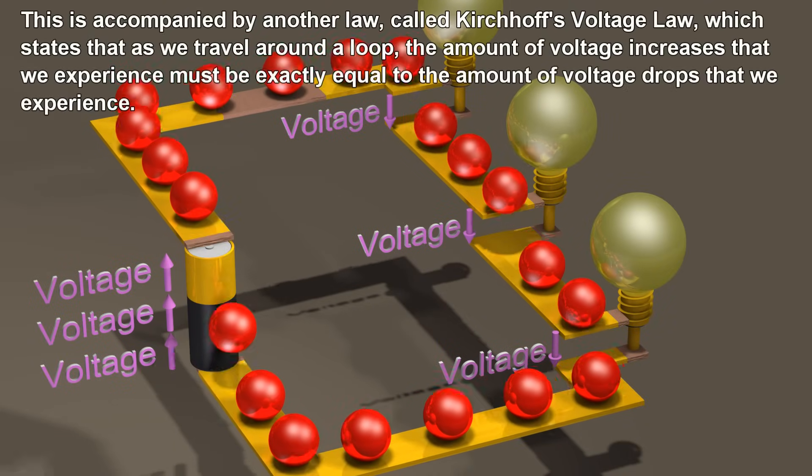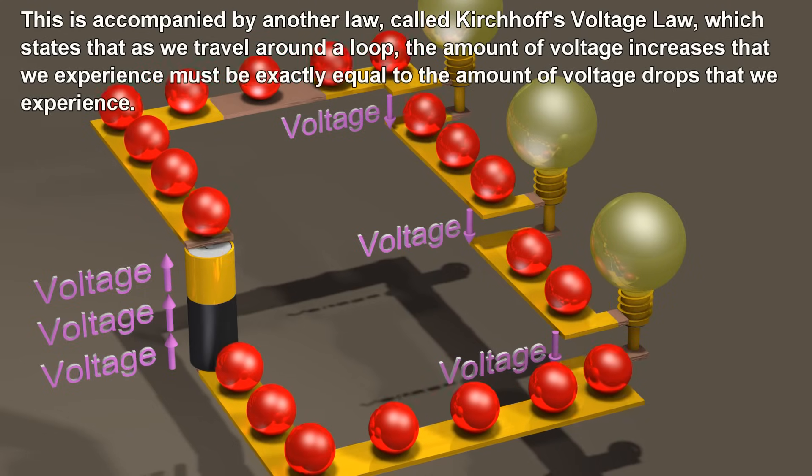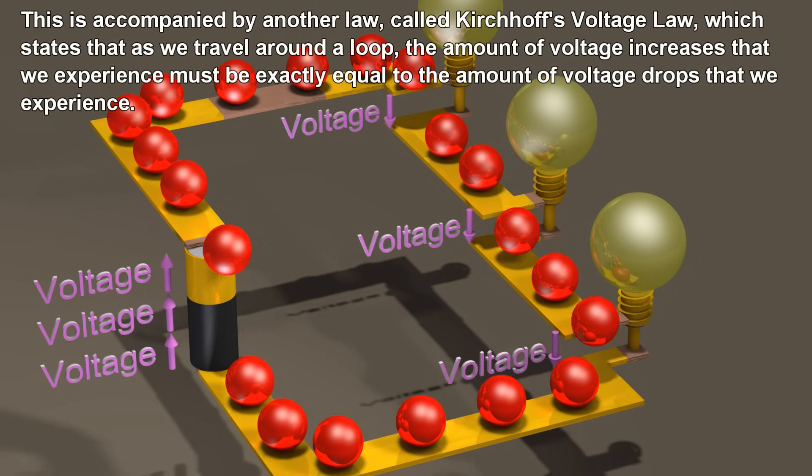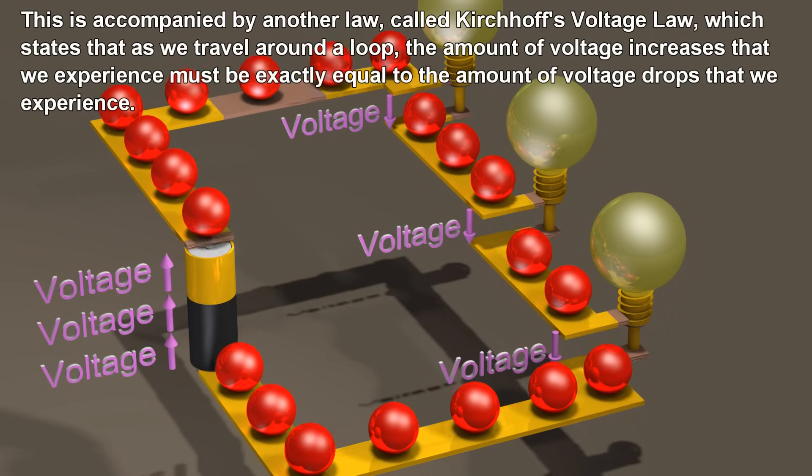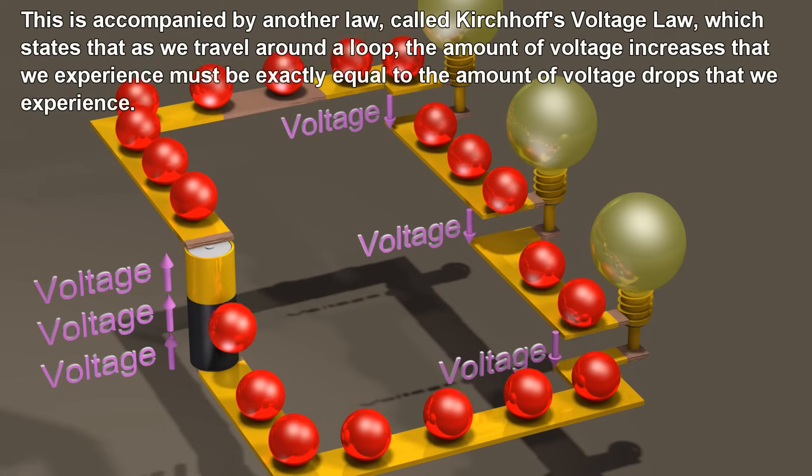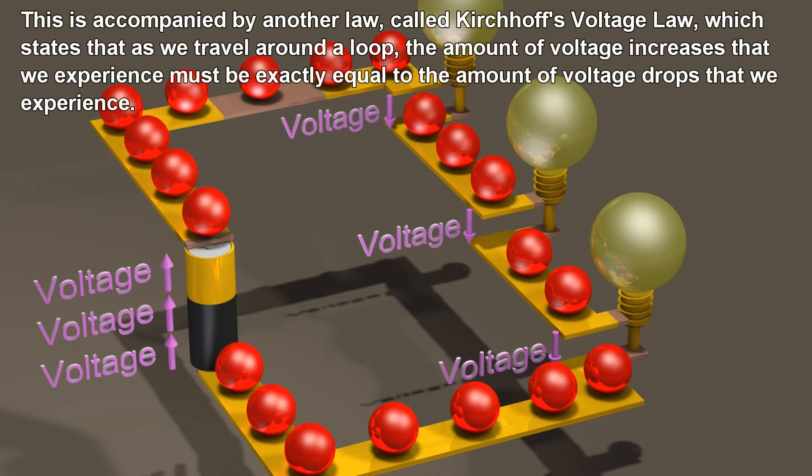This is accompanied by another law, called Kirchhoff's voltage law, which states that as we travel around a loop, the amount of voltage increases that we experience must be exactly equal to the amount of voltage drops that we experience.